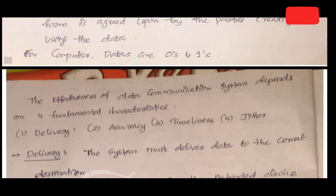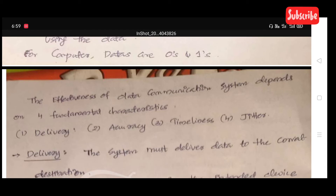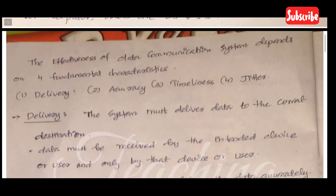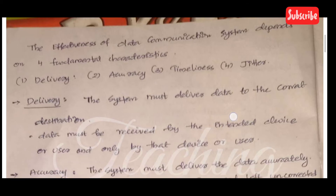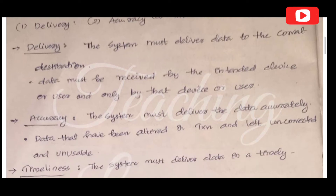The effectiveness of a data communication system depends on four fundamental characteristics: delivery, accuracy, timeliness, and jitter. The first one is delivery — the system must deliver the data to the correct destination. The data must be received by the intended device or user, and only by that device or user.